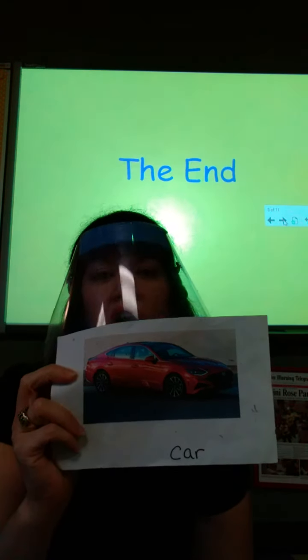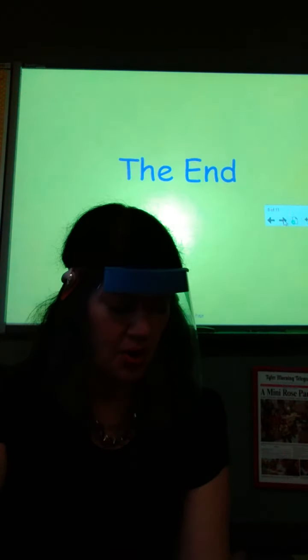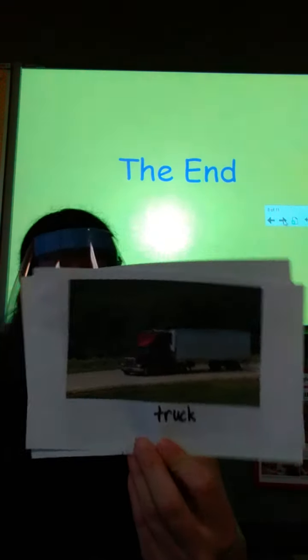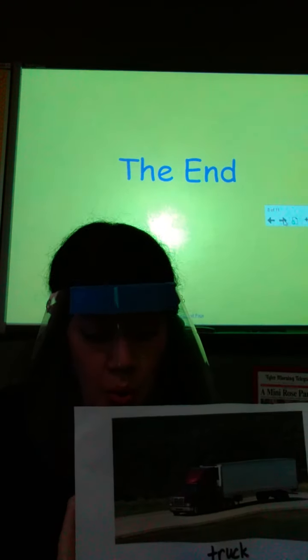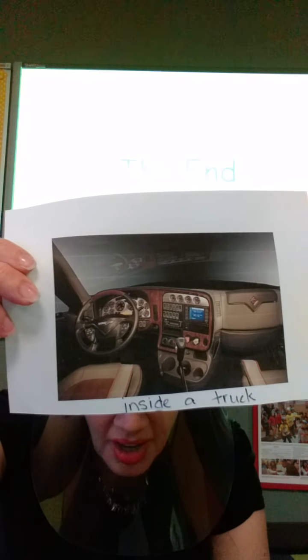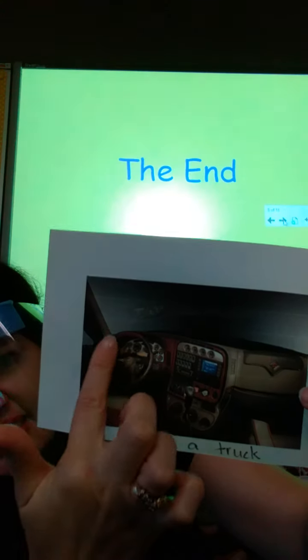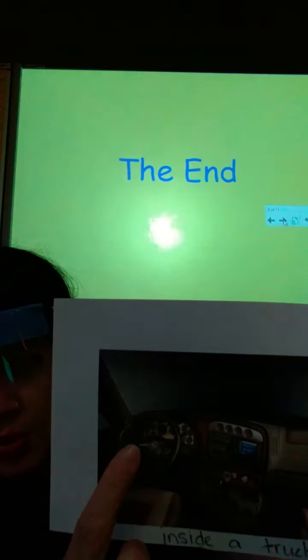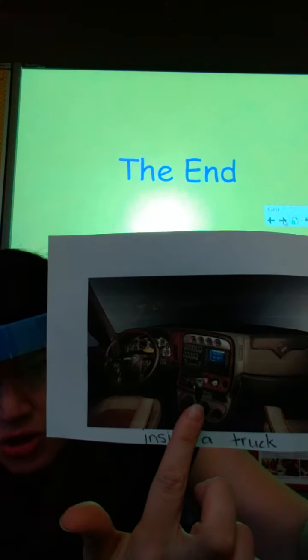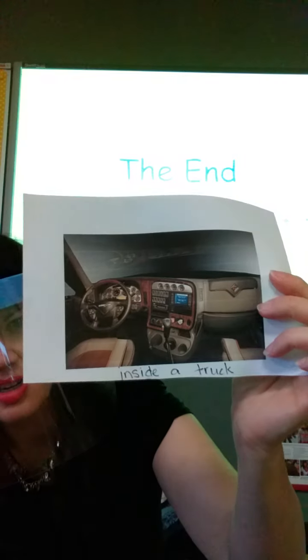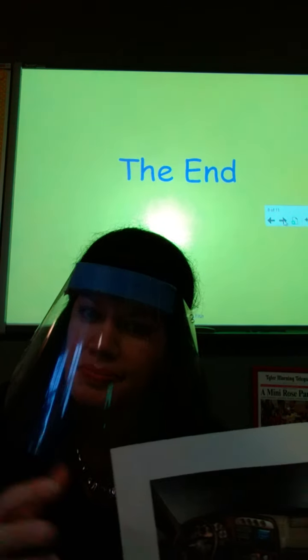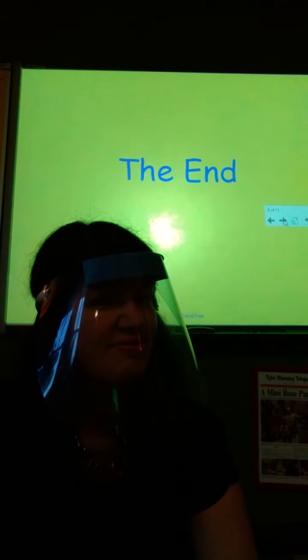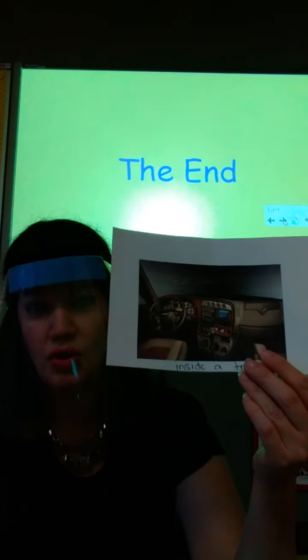Let's talk one more time about the words that we've been learning about. We've been learning about a car, and we know where a car goes — on the road. Then we learned about something much larger, much bigger than a car — we learned about a truck, and the truck also goes on the road. Look at this — this is the inside of a truck. This is the steering wheel, and that's what the driver uses to move the truck around. He has lots of knobs and switches. Would kids drive a truck? No — it's for adults, for grownups to drive a truck.